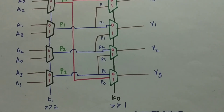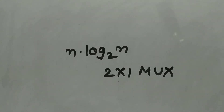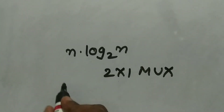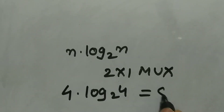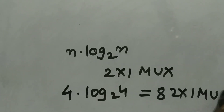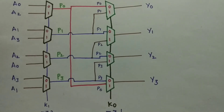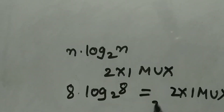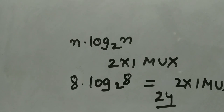Now let us consider how many multiplexers we need. For an n-bit data word designed using 2-to-1 multiplexers, we require n·log₂(n) multiplexers. For 4-bit data: 4 × log₂(4) = 4 × 2 = 8 multiplexers — exactly the 8 multiplexers we saw. For 8-bit data: 8 × log₂(8) = 8 × 3 = 24 two-to-one multiplexers.